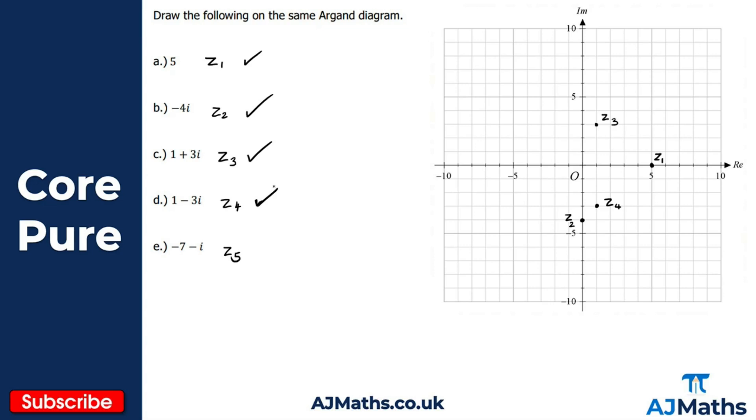Finally for z5, we've got minus 7 minus i, so we go seven units to the left: five, six, seven, and then minus i means we go down one unit. That would be the point z5 there.